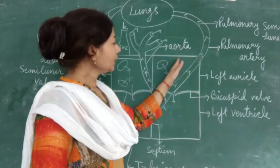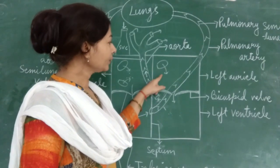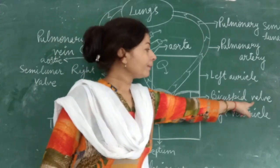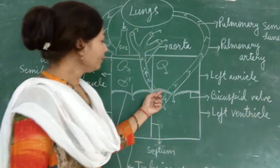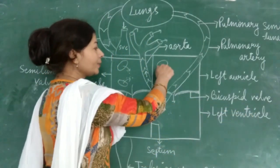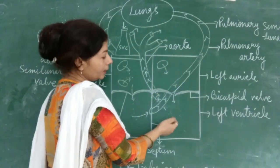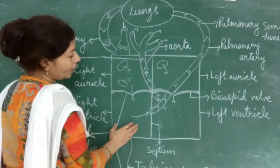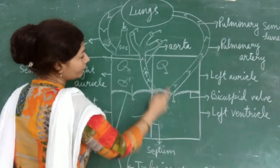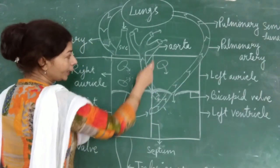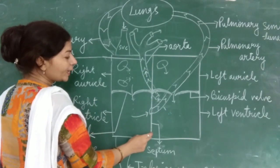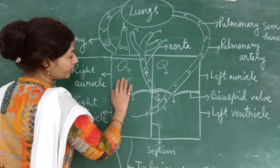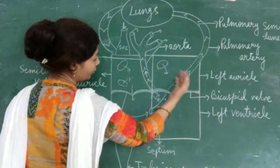Similarly, on the left side of the heart, in between the left auricle and left ventricle there is a bicuspid valve which prevents backflow of blood from the left ventricle back to the left auricle. The right side of the heart is divided from the left side of the heart by a muscular structure in between known as the septum. The septum separates the right part of the heart from the left part of the heart.